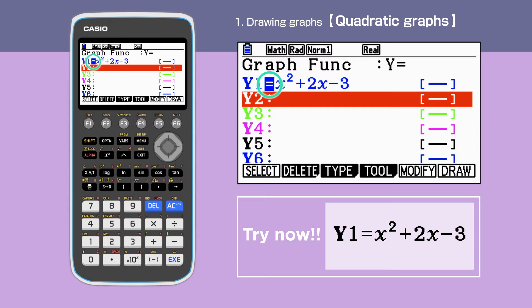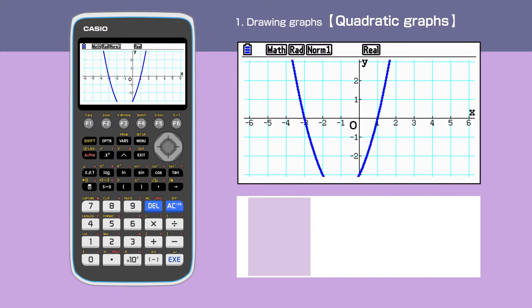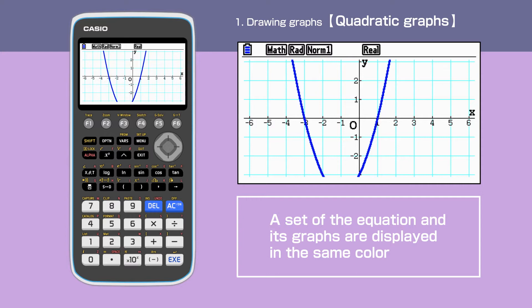After pressing the Enter key, the equals sign will be highlighted. This means the calculator is going to draw a graph of this function. Press F6 to draw the graph. The graph of quadratic is now shown on the display.